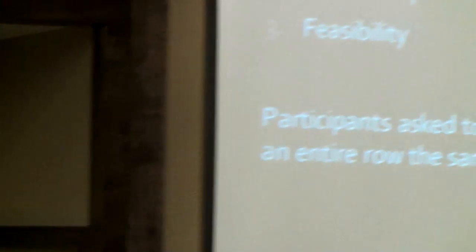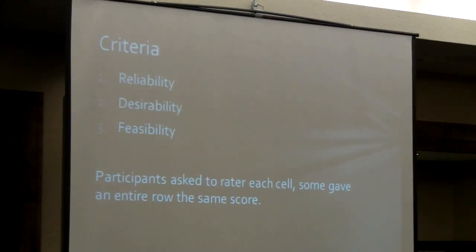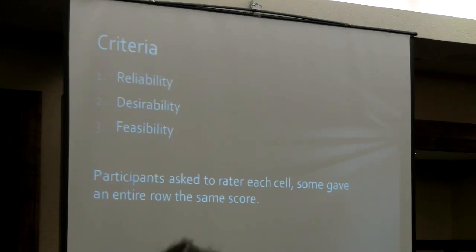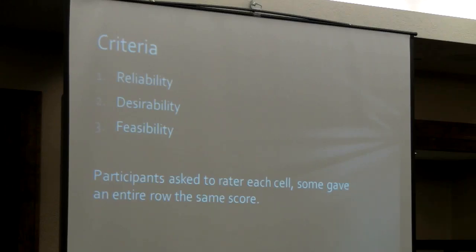That's why I've been concerned about Delphi study participants talking to each other — I've got three floating around here at this conference. The idea was to take this rubric and get experts in the OER field to tell me what they think about it. The criteria I used were three things: one is reliability — face reliability, do you think you could reliably get this particular cell in the rubric? Second is desirability — how worthwhile is it to get it? And third is feasibility — how practical is it to get these ratings?